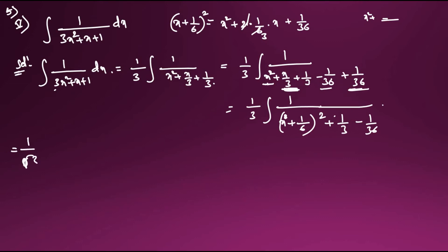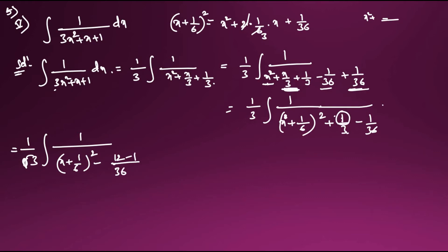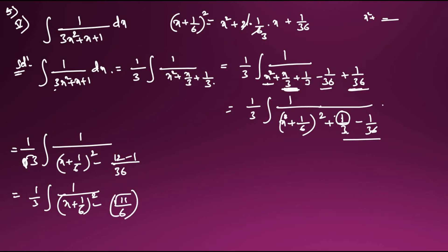So the integral becomes (1/3)·integral of 1/((x + 1/6)² + 11/36) dx. We can write 11/36 as (√11/6)². So the denominator is (x + 1/6)² + (√11/6)². This matches the formula: integral of 1/(x² + a²) dx = (1/a)·tan⁻¹(x/a) + C.